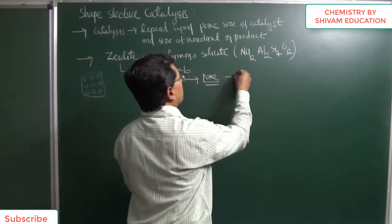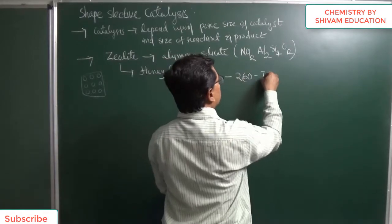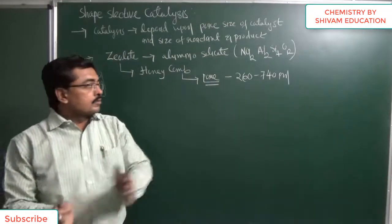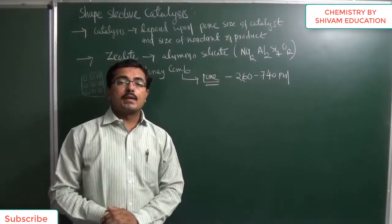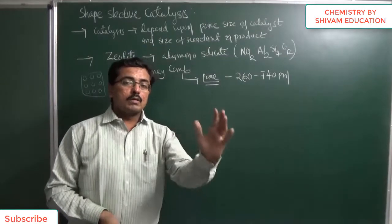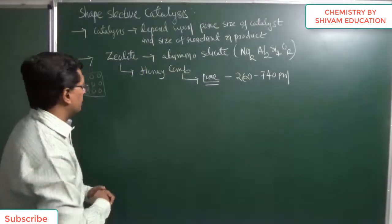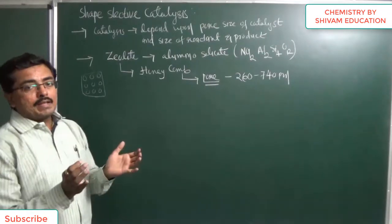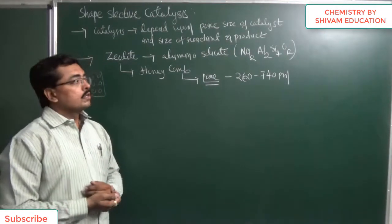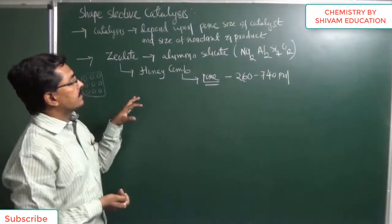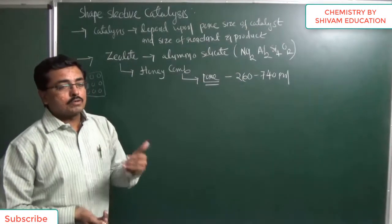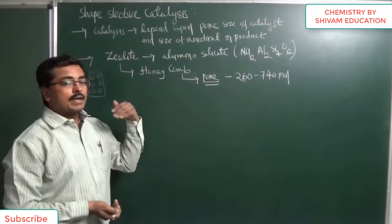The size of the pores is 260 to 740 pm. Molecules which are smaller than 740 pm can adsorb on the surface of the catalyst. So it can adsorb or desorb depending upon the size of the catalyst pore, size of the reactant and product.